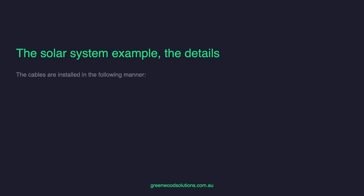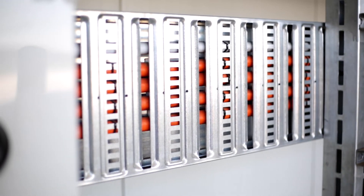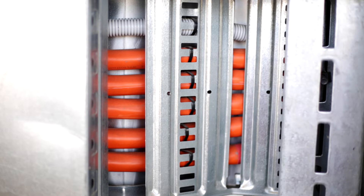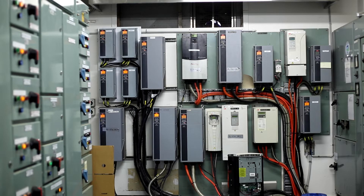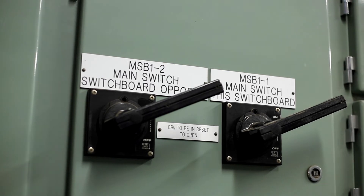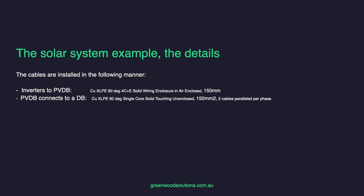The cables are installed in the following manner — this is very important. The inverter to the PVDB is in copper, XLPE, 90 degree, 4-core plus earth, solid wiring, enclosed in air — 150mm enclosed cable. The PVDB connects to a DB in copper, XLPE, 90 degree, single core, solid, touching, unenclosed, 150mm, with two cables paralleled in this situation.